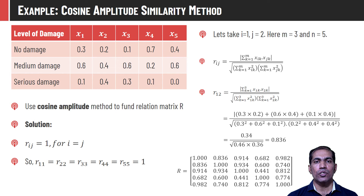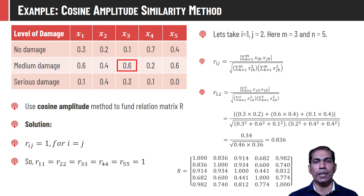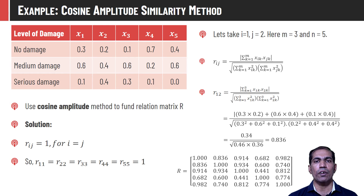From the matrix we can also observe that vectors x4 and x3 have the minimum similarity score of 0.441. Looking at the data, the no-damage score for x3 is 0.1 while for x4 it is 0.7 — a difference of 0.6. For medium damage the difference is |0.6 − 0.2| = 0.4, and for serious damage |0.3 − 0.1| = 0.2. So this is very intuitive both from the table and from the matrix — it is easy to understand which vectors are similar and which are most dissimilar.